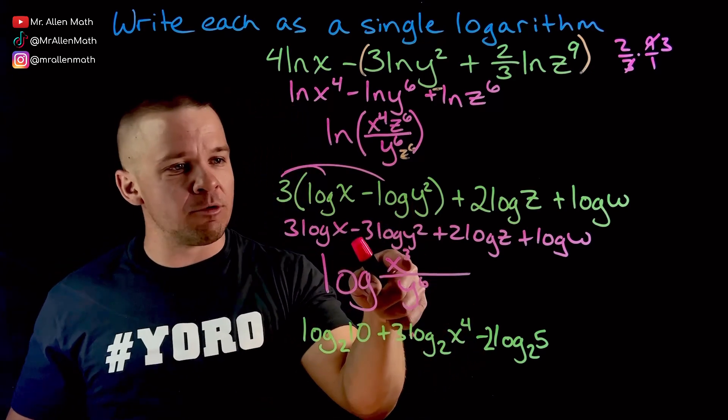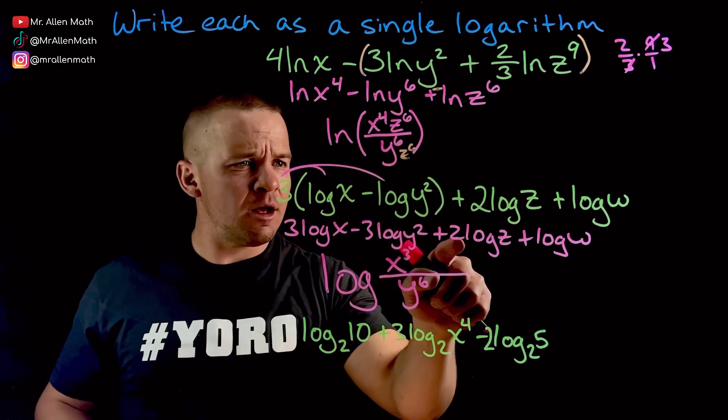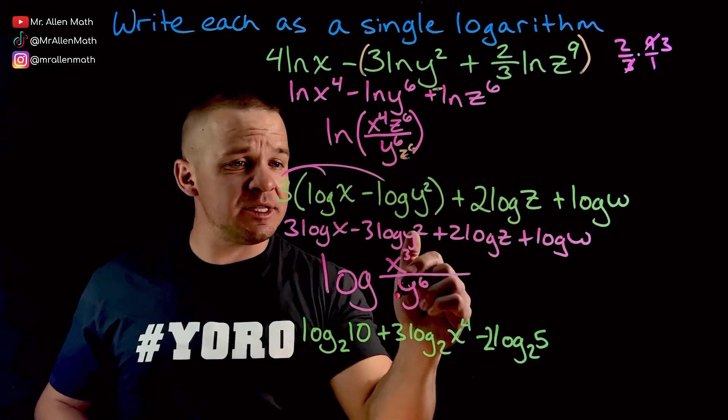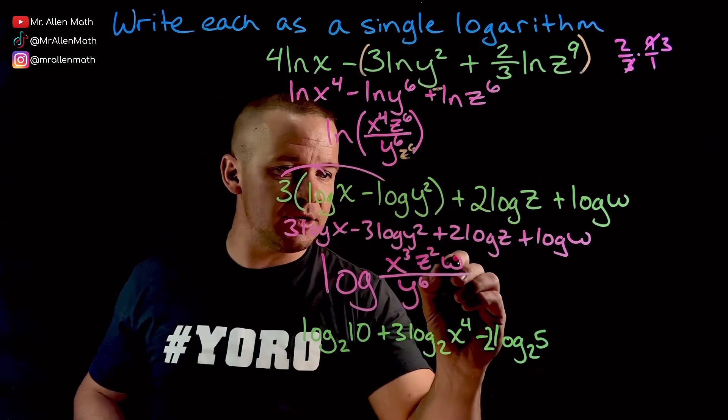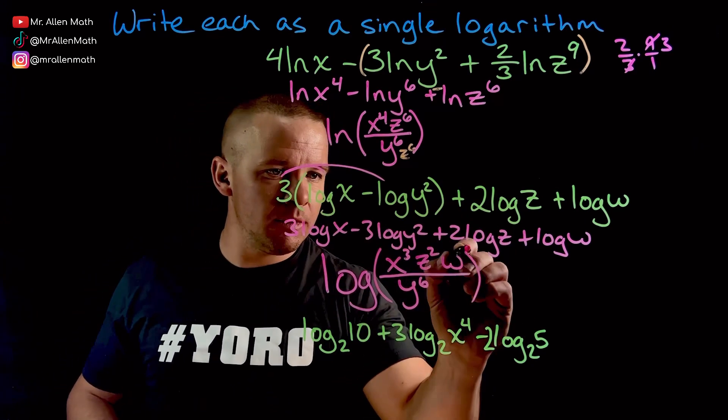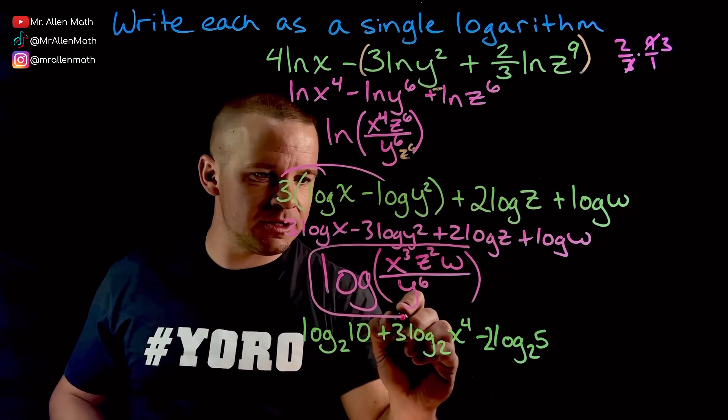Next one. It's positive. It's going to be in the numerator. I got, let's see here. Nothing here with the z. So it's going to be z squared. Z squared will be in my numerator. And then lastly, nothing to do with that one, but it is positive. It goes in the numerator. Boom. Boom. Final dope answer here.